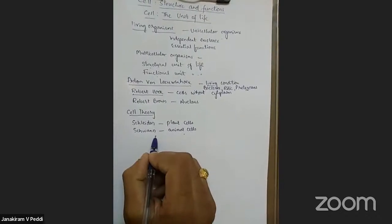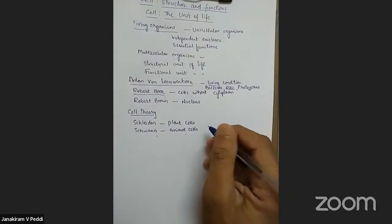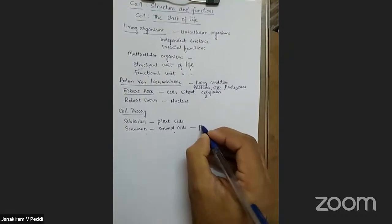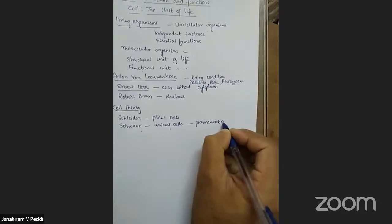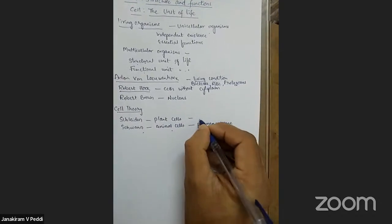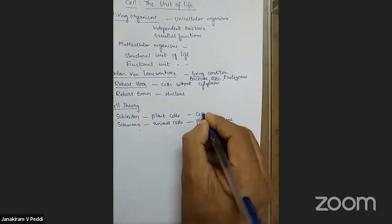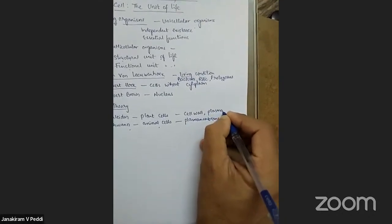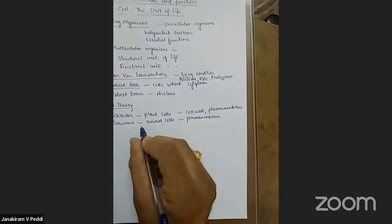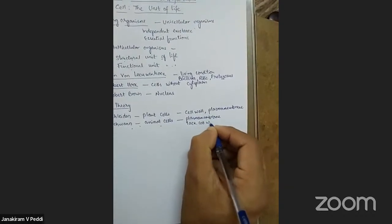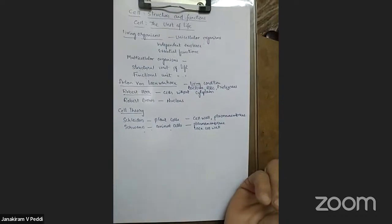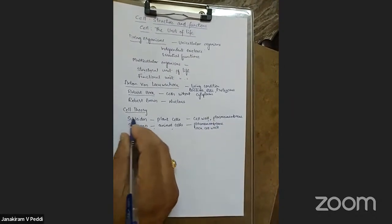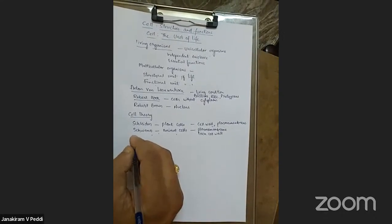Schwann identified the basic difference between plant and animal cells: in animal cells, the outermost limiting structure is the plasma membrane, but in plant cells there is an additional layer called the cell wall. Plant cells have both a cell wall and a plasma membrane, whereas animal cells lack a cell wall. This presence of a cell wall is a unique character found only in plant cells.